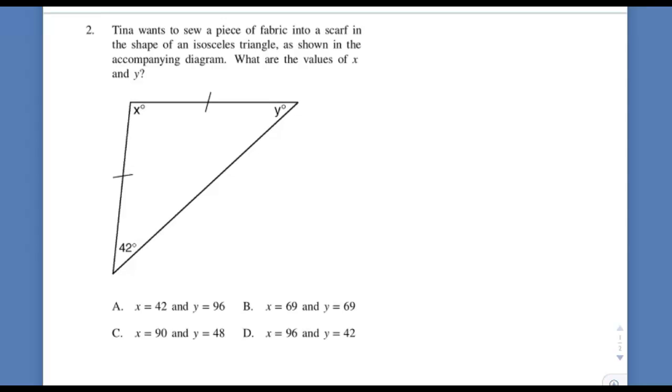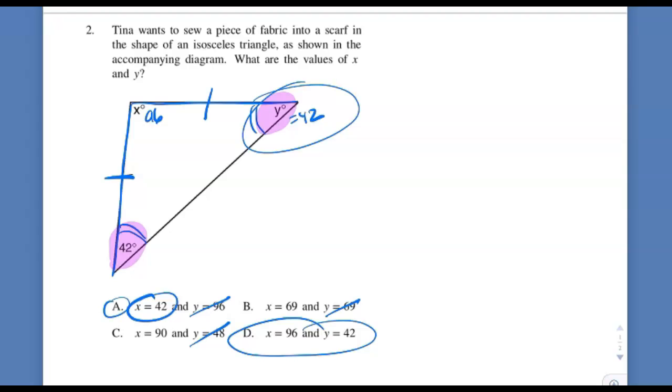Tina and her isosceles triangle scarf. If you look at the triangle the way it's represented here, you have the two legs that are equal, which means the two base angles must be equal. So if this is 42, what must this be? 42. So you're looking for a choice where y is 42, and there is really only one that has that. I think what may have happened is people thought this was 42, their eyes saw the 42 right here, and a lot of people picked A.